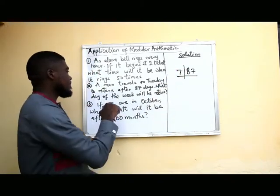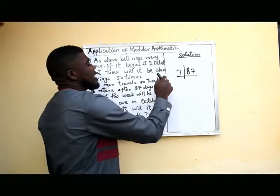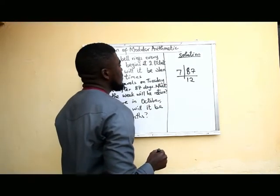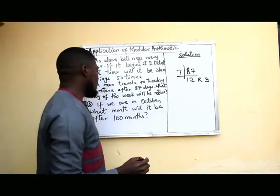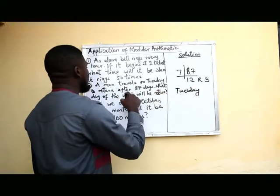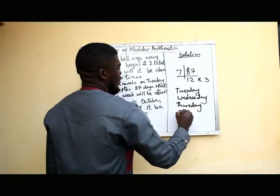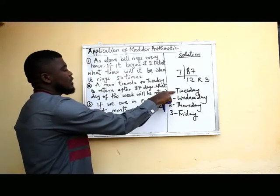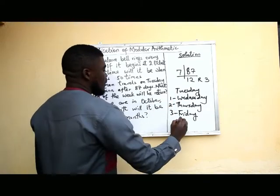There are 7 days in a week, and every Tuesday completes another week. When you divide 87 by 7, that gives us 12, and 12 times 7 is 84, with a remainder of 3. Since he started his journey on Tuesday, we count 3 days after Tuesday: 1, 2, 3 — which means he is going to return on Friday.